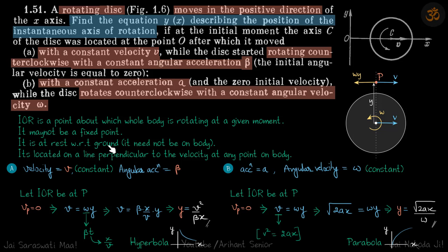The IOR is at rest with respect to the ground, and it need not be on the body. Finally, it's located on a line perpendicular to the velocity at any point on the body. So if you take any point on a rotating body and draw a perpendicular to its velocity vector, that perpendicular line will pass through the instantaneous axis of rotation.